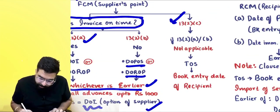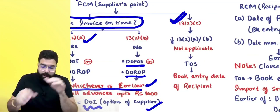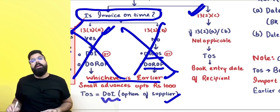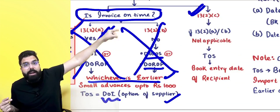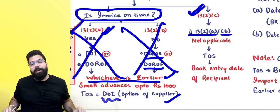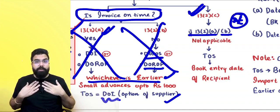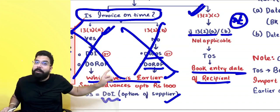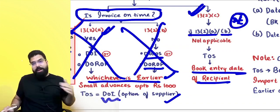Section 13.2(c) talks about the case where neither 13.2(a) nor 13.2(b) applies. In that scenario, the time of supply will be based on the recipient's book entry date. The recipient records the expense entry, and that date becomes the time of supply.